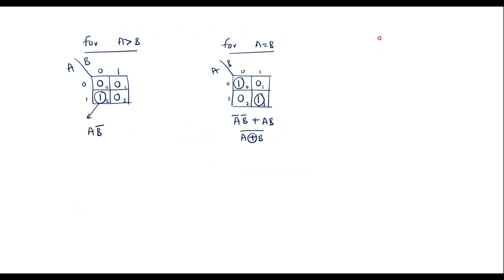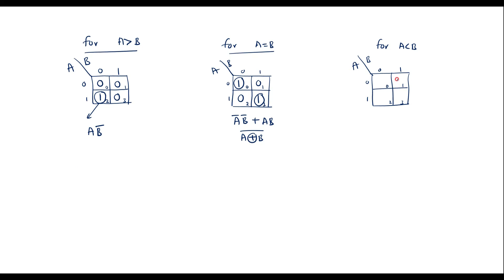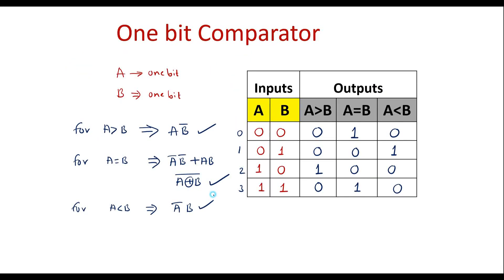Now let me check the K-map for a less than b. Drawing the two-variable K-map again with cells 0, 1, 2, 3: the output is high for cell number 1 only, so we write 1 in cell 1 and 0 in the others. The corresponding output value for cell 1 is ā·b. So we confirm that for a less than b, the expression is ā·b.